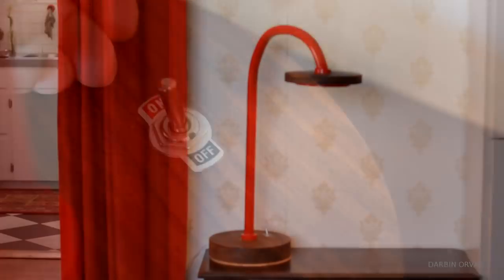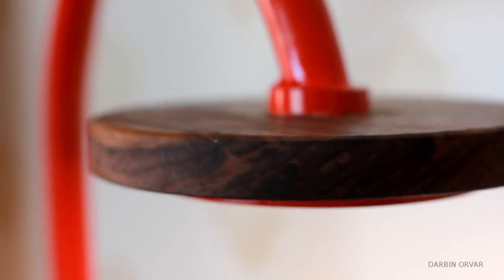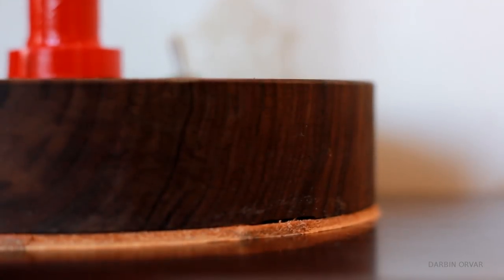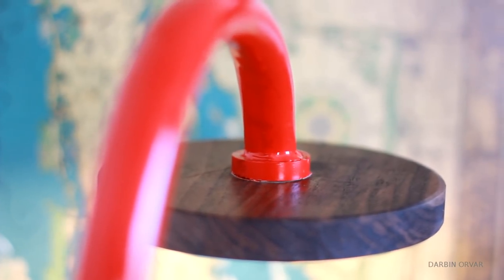Today's project is an LED desk lamp made with a bent PVC pipe for the arm and walnut for the base and the top. I really wanted to utilize PVC in a different way, and I think it turned out pretty neat. So let's go over how it's made.